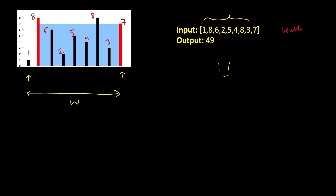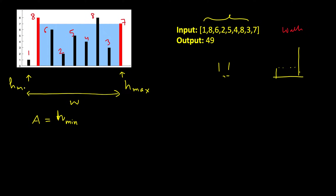The height of water is determined by whichever bar is shorter — if it goes beyond that height it will overflow. So the water height is H_min (the minimum of the two bar heights), and the initial area is H_min times width. You have taken the maximum possible width.